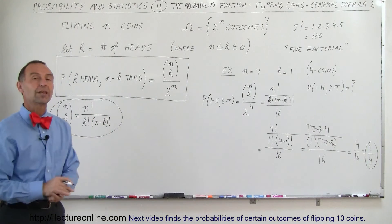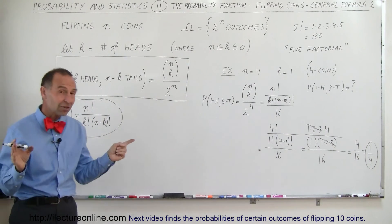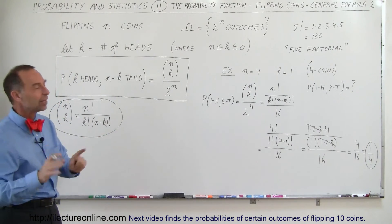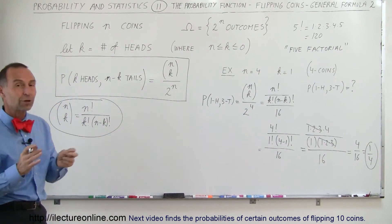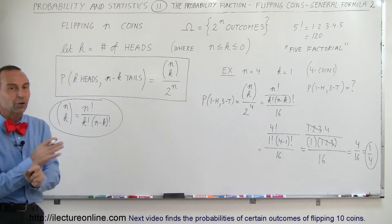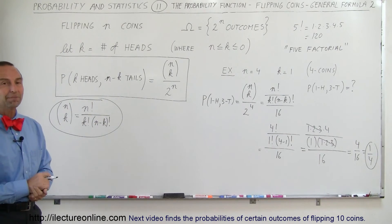We haven't talked about the order of the heads and tails yet, but that's something else that will come later. Simply here, we're looking for the event where we have 1 head, 3 tails, and we don't care what order they're in, and so that would be the probability, 1 out of 4. And that's how we do that.